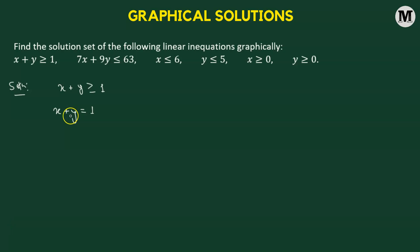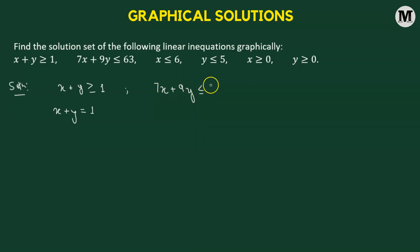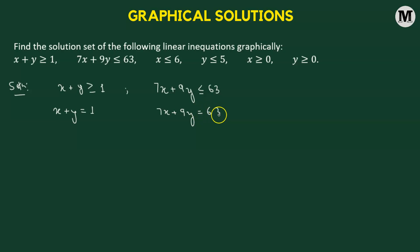We can easily plot the graph of x plus y equals to 1 on an xy plane. Moving on to the next linear equation, we have 7x plus 9y less than or equal to 63. We can convert it by replacing the inequality symbol with an equality symbol to get 7x plus 9y equals to 63, which is a linear equation in two variables x and y.